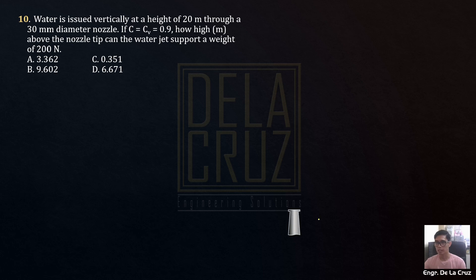So this is the nozzle. The water is issued vertically at a height of 20 meters. Of course, there's a point where the water stops in going up. 20 meters is the maximum height. How high above the nozzle tip, this is our nozzle tip.